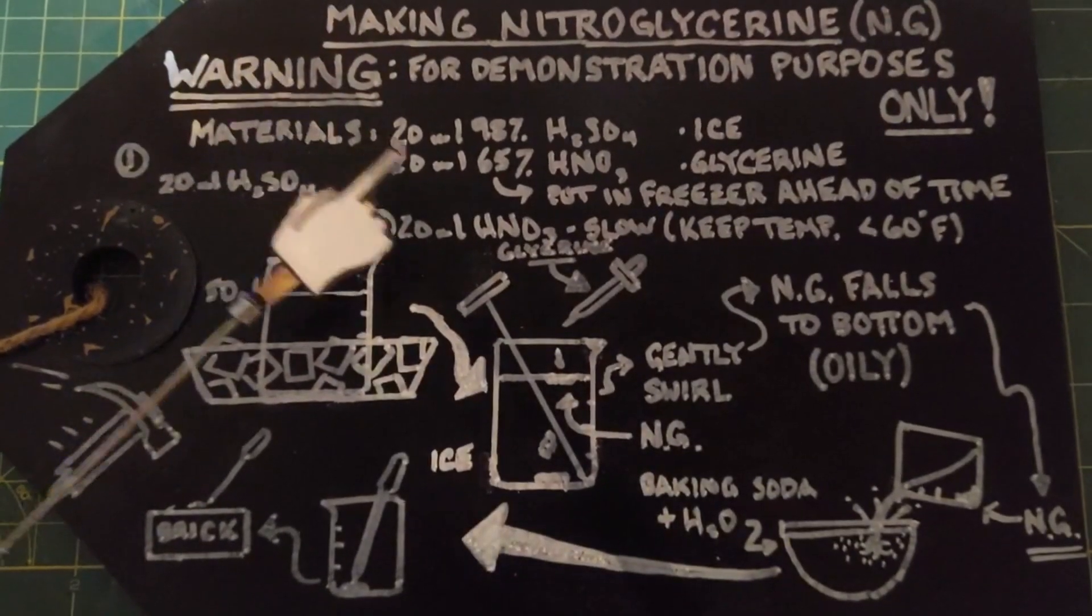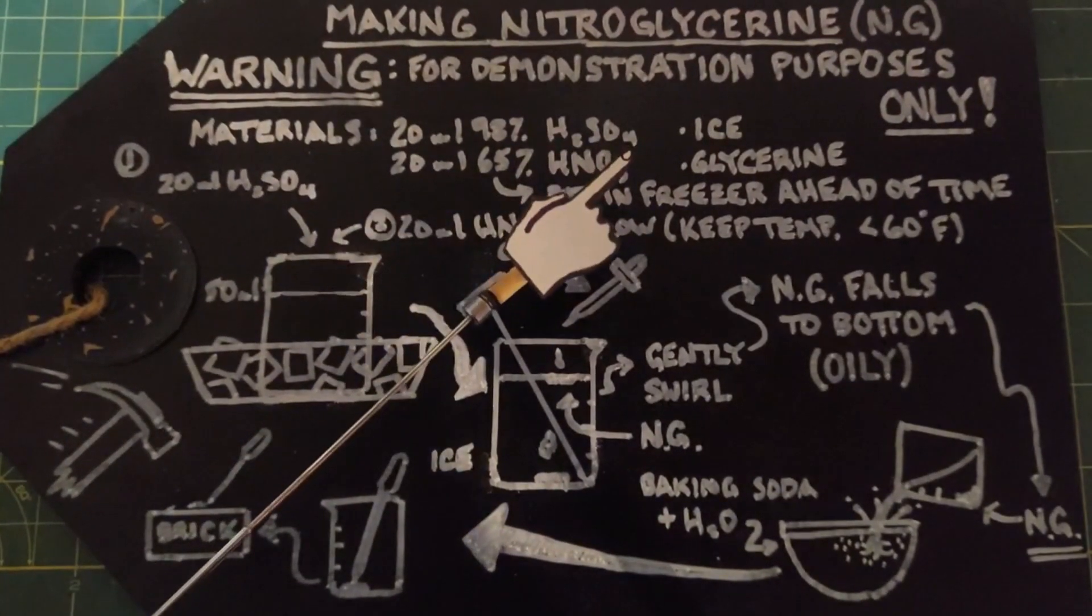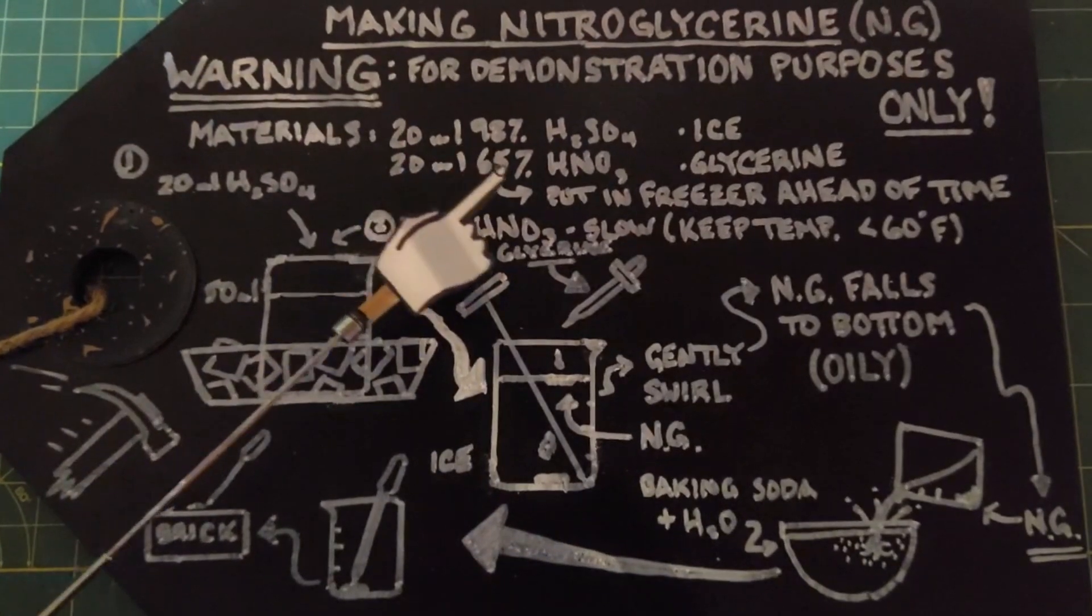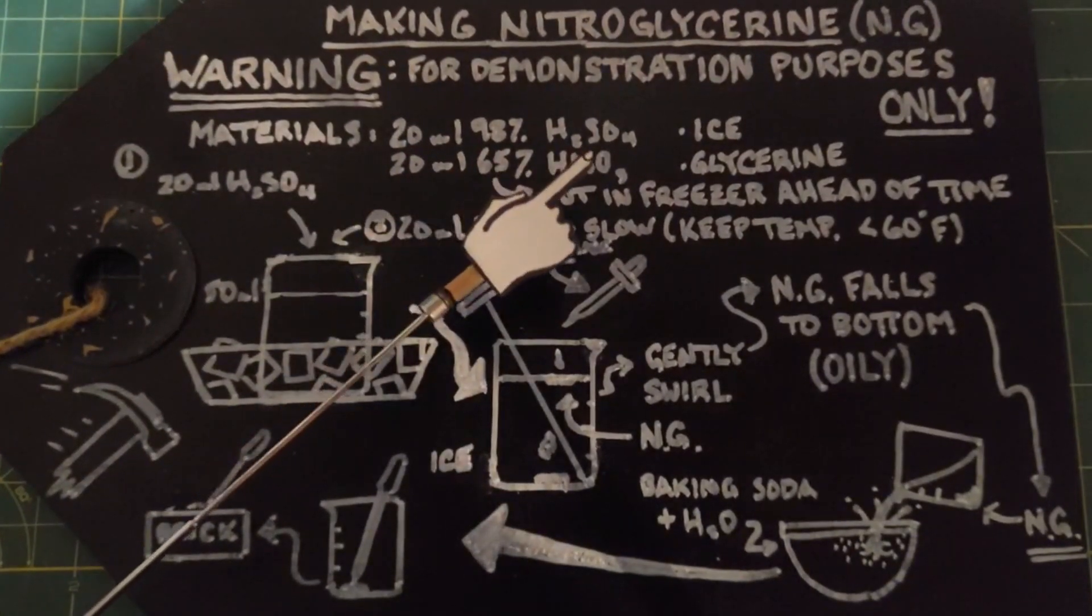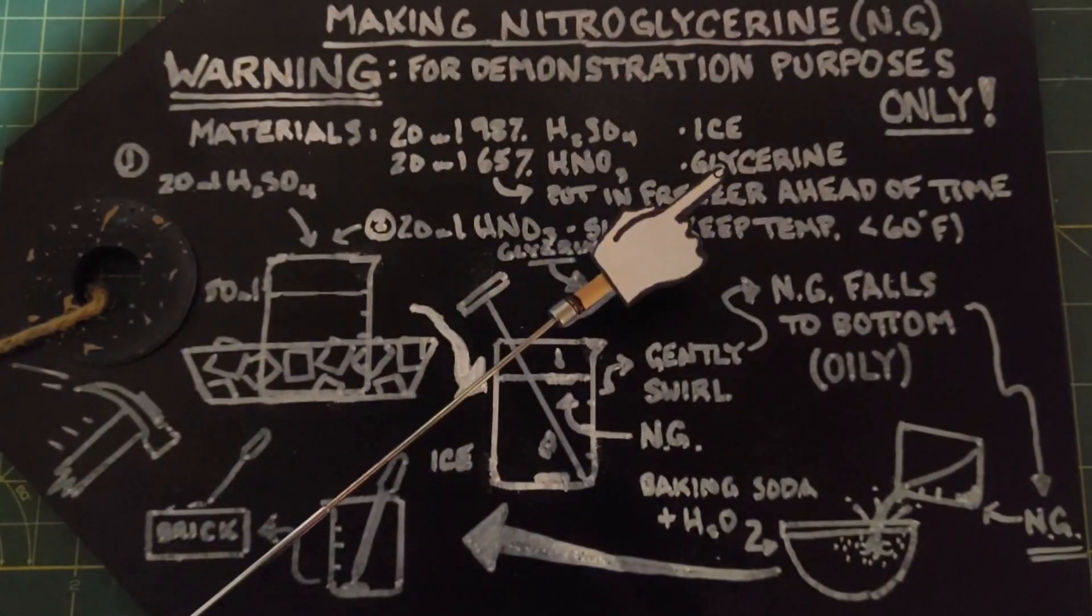For our materials we need 20 milliliters of 98% sulfuric acid, 20 milliliters of 65% or concentrated nitric acid, glycerin and some ice.